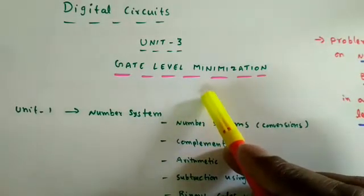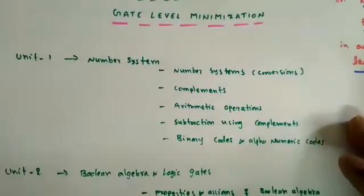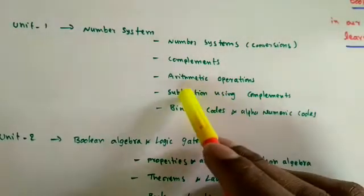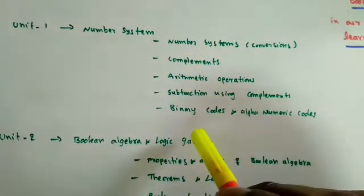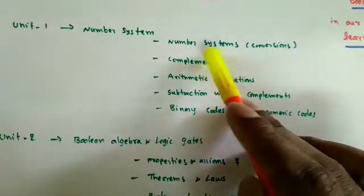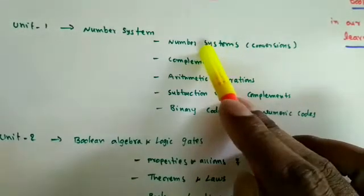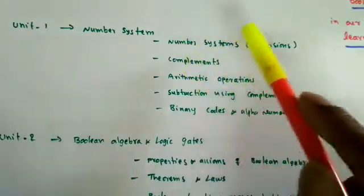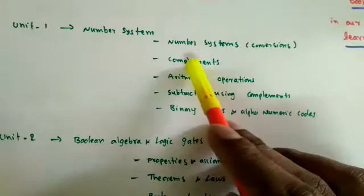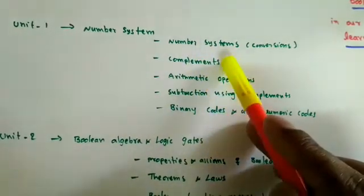But before that, so far we discussed two units: number systems and Boolean algebra and logic gates. Under number systems, we covered conversions between binary, decimal, octal, and hexadecimal number systems, as well as complements — one's complement, two's complement, ten's complement, nine's complement, seven's and eight's complement.